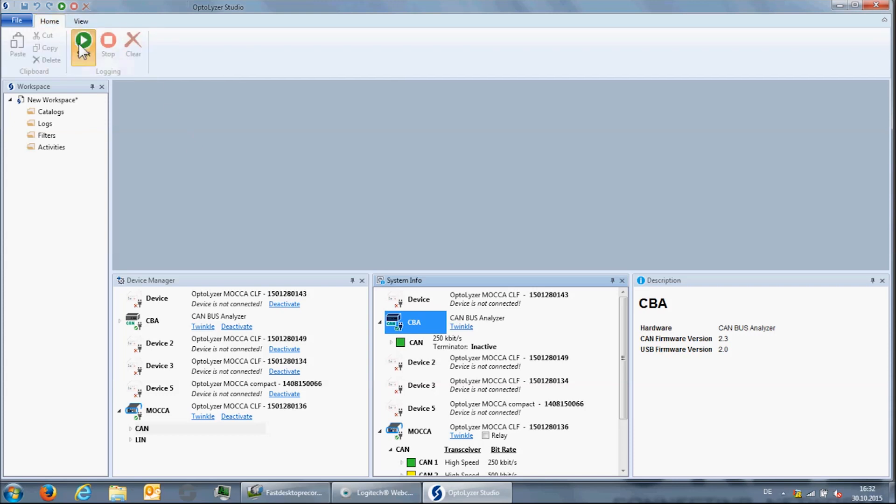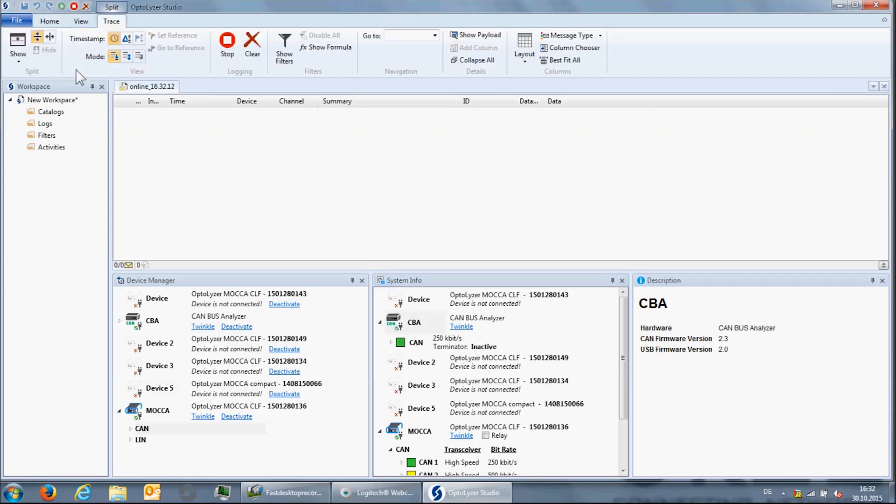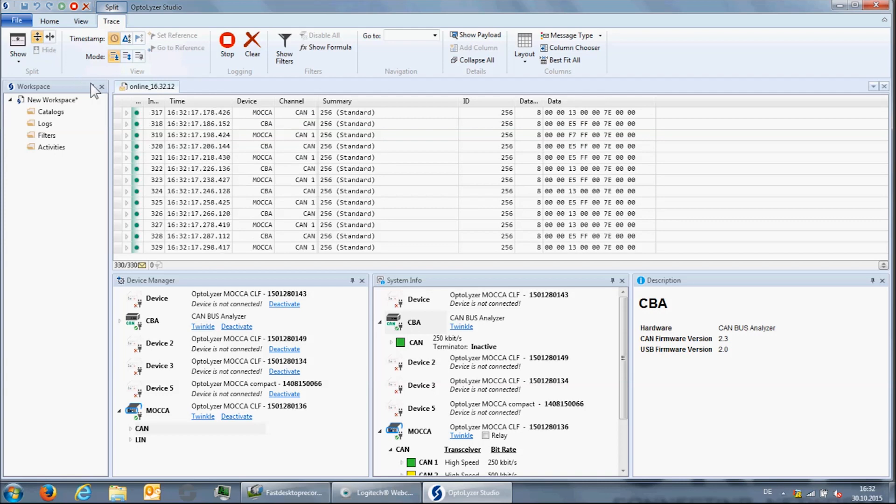But let us start a trace. As you can see, we receive status messages from the motor control board on both hardware interfaces. In the summary and the ID columns, we can see that the identifier of the messages is 256, which is certainly not very descriptive.